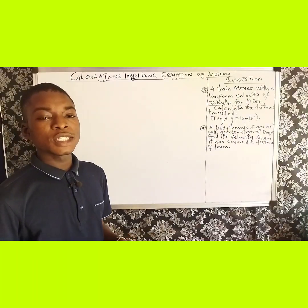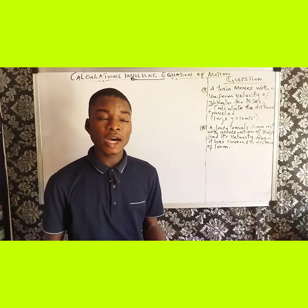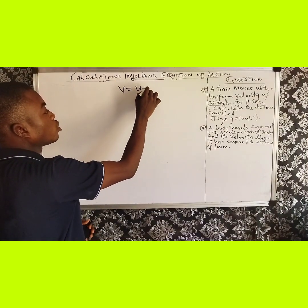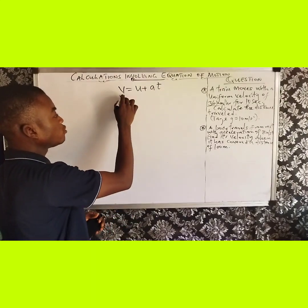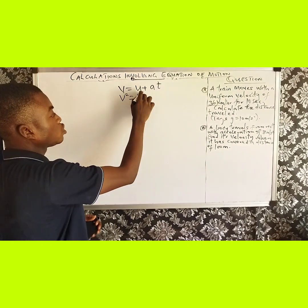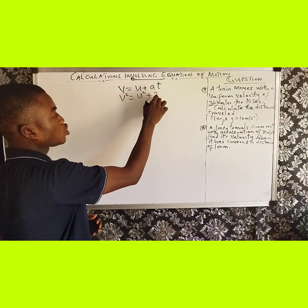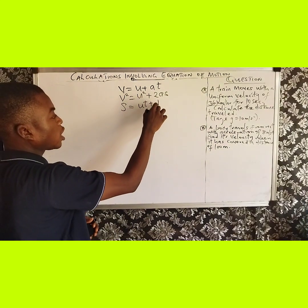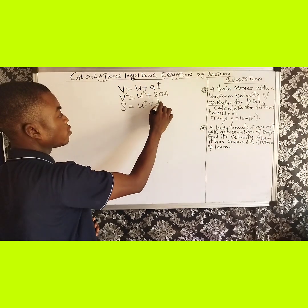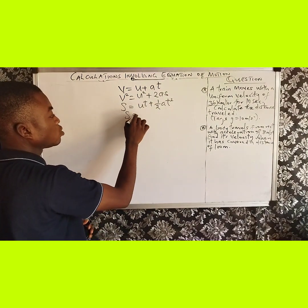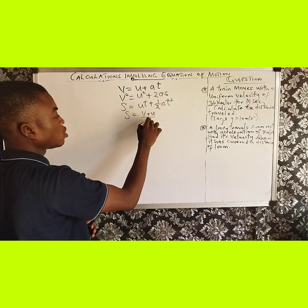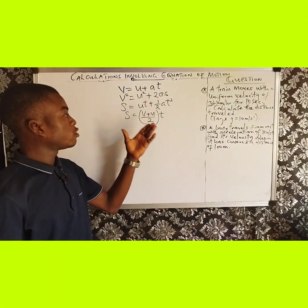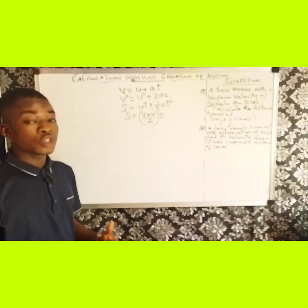Let me bring it out by writing the four equations of motion that we have. The first one is V equals U plus AT. The second one is V squared equals U squared plus 2AS. The third one is S equals UT plus half AT squared. And the fourth one is S equals V plus U over 2 multiplied by T. So these are the four equations of motion.